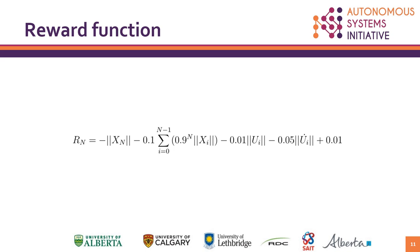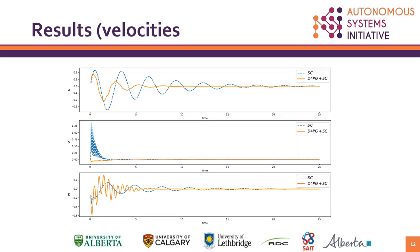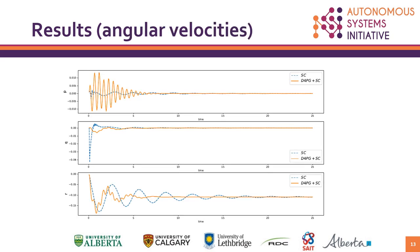The D4PG agent is a reinforcement learning agent which uses the deep deterministic policy gradient method and is also an update to this method. The way it works is that the critic gives a distribution of rewards to the actor, and the actor uses that along with the states from the helicopter to find the parameters for the sliding mode controller. This is the setup for the actor-critic of the D4PG agent.